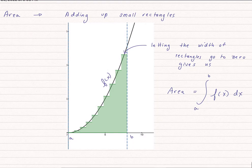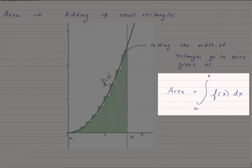When we first started talking about area and how to calculate area, what we did is we added up a bunch of small rectangles. In fact, we started adding up an infinite number of rectangles. We let the width of those rectangles go to zero, and we got the area was equal to the definite integral from a to b of f(x) dx.